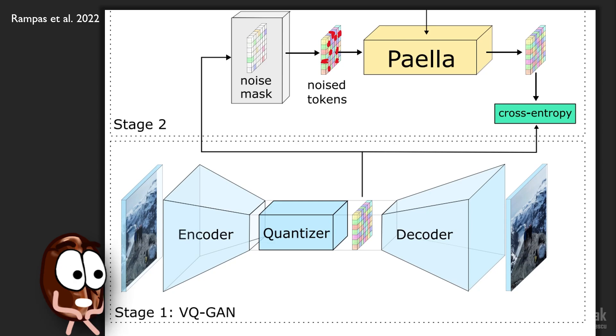Noising means that they are taking another random codeword from the codebook to replace it. In other words, they use the centroid of another image token cluster. Then they send the noise representation to Paella for denoising.